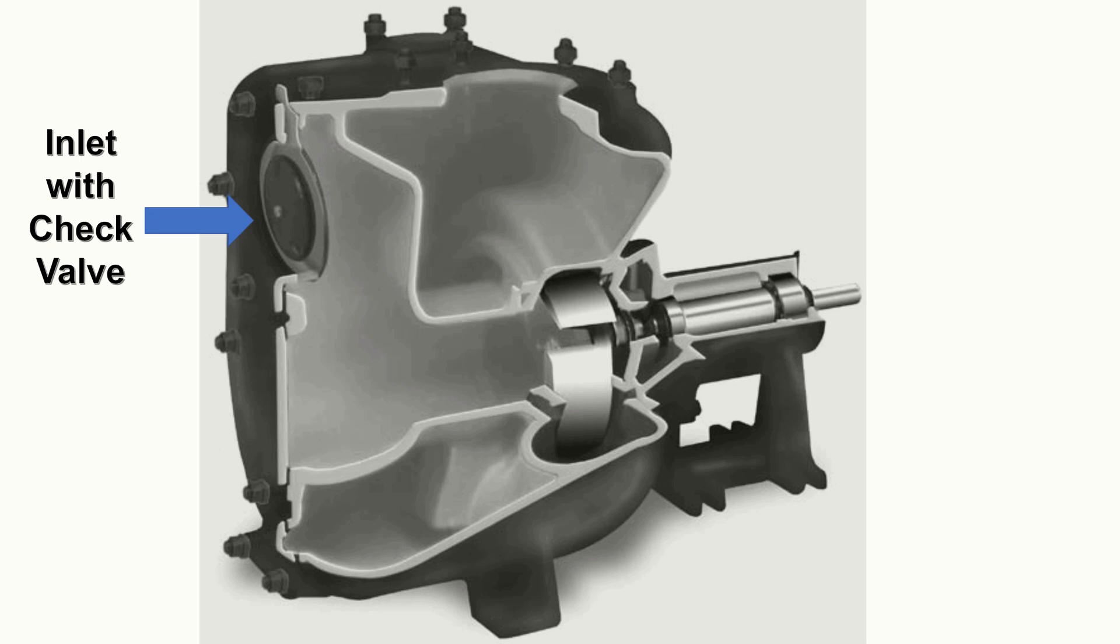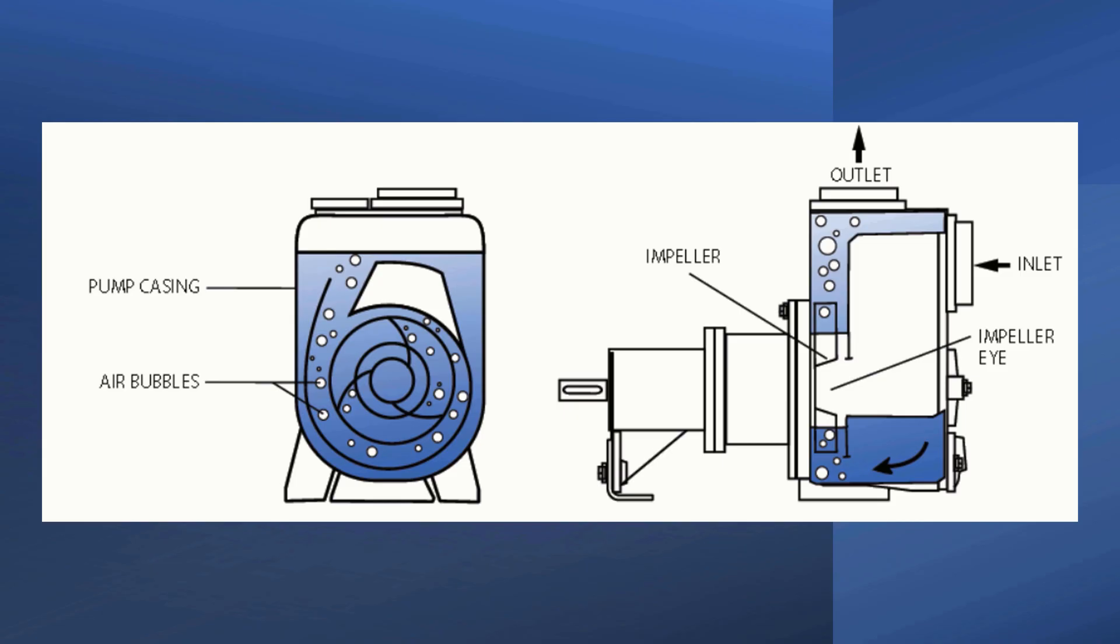Self-priming pump. Self-priming pump with an inbuilt check valve and priming chamber has the provision for venting the air during the priming, and also the design is such that the air does not come in contact with the impeller. Hence, it handles the air in suction lift condition as long as it can handle the system's suction energy conditions.